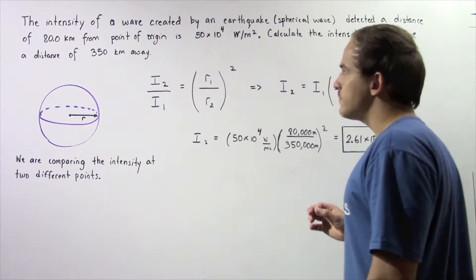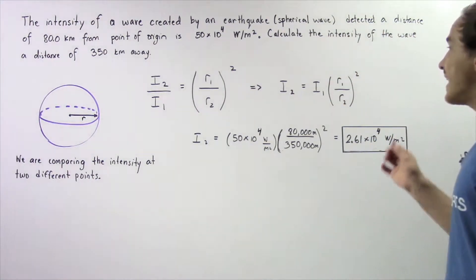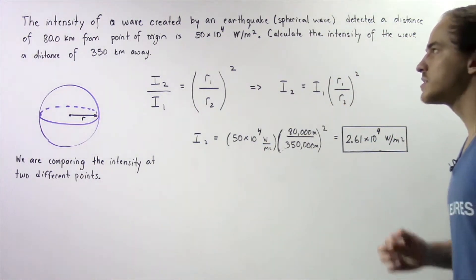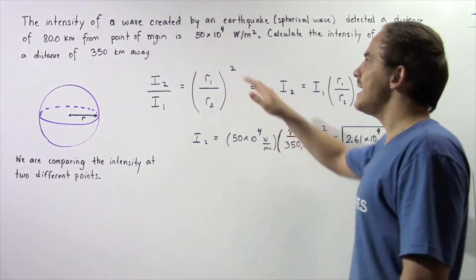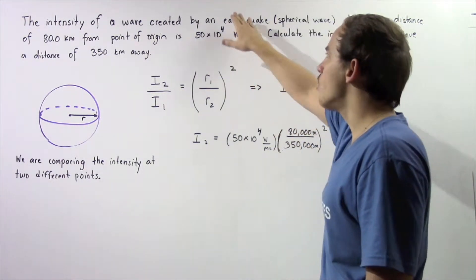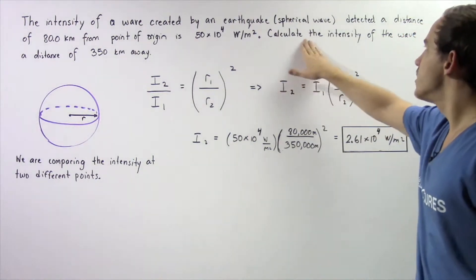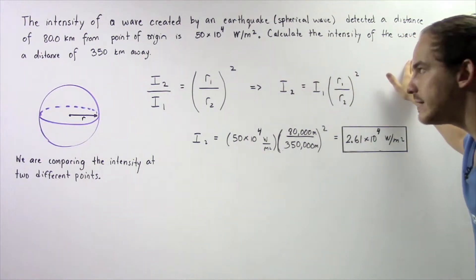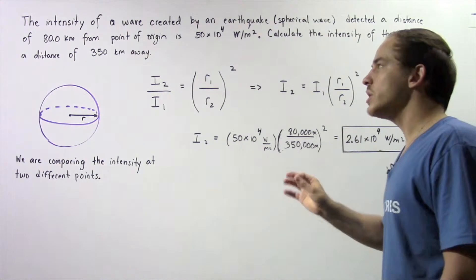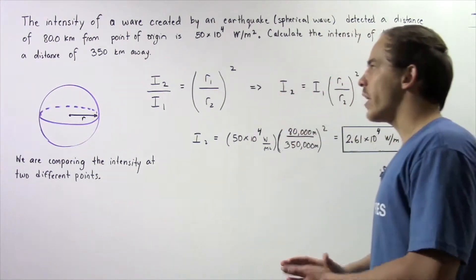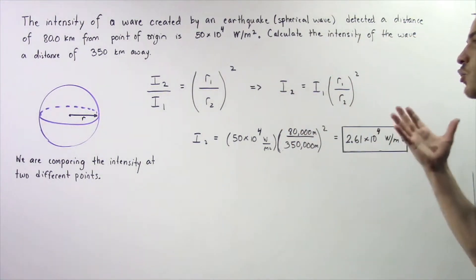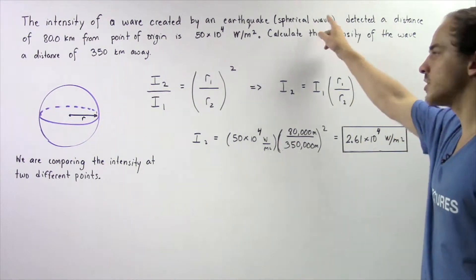Suppose the intensity of a wave created by an earthquake detected a distance of 80 kilometers from the point of origin is 50 times 10 to the 4 watts per meter squared. We want to calculate the intensity of the wave a distance of 350 kilometers away assuming our wave created by the earthquake is a spherical wave.